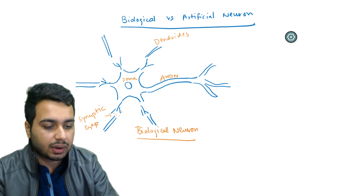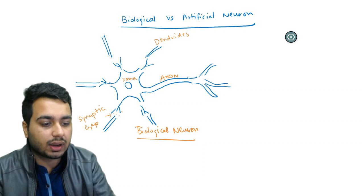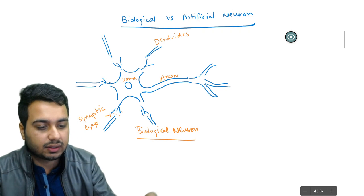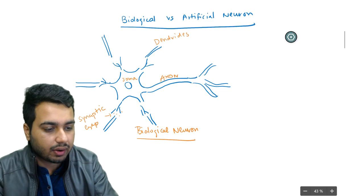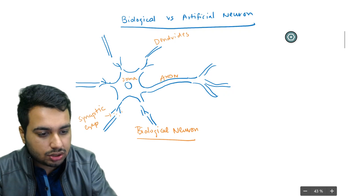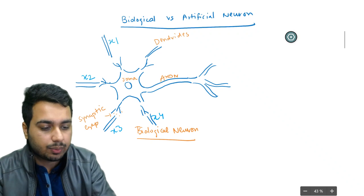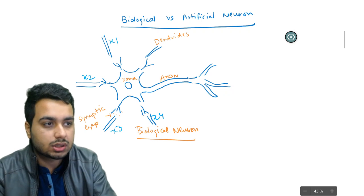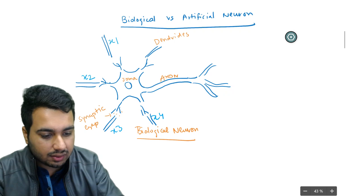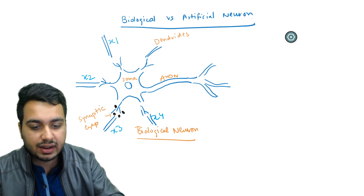We do not know the exact functioning of the brain, but neural networks are an attempt to mimic it. In the brain you have a collection of neurons, and each neuron has dendrites which bring input from other neurons to the current neuron. Each dendrite brings some input x1, x2, x3, x4, and so on, and this input goes to the processing unit called the soma, where the neuron does some processing. There is also a synaptic gap which modifies these signals.